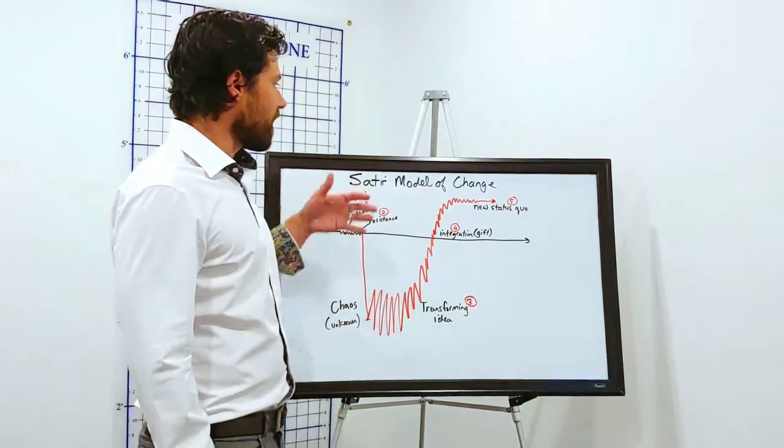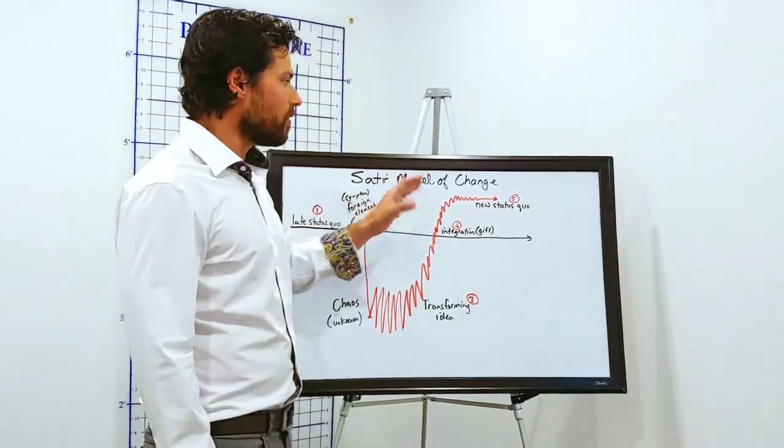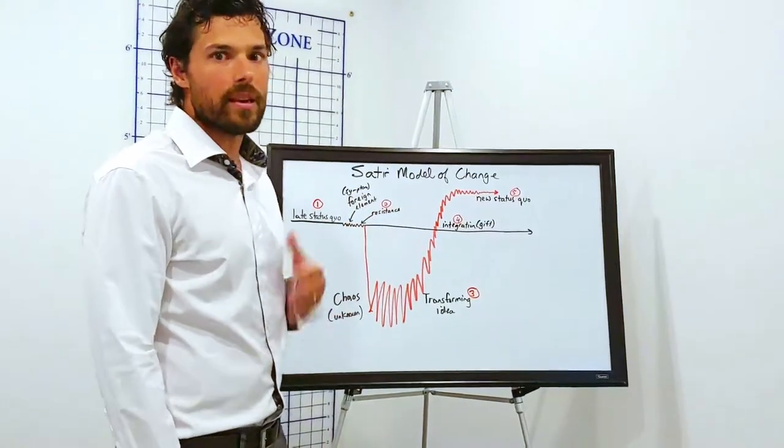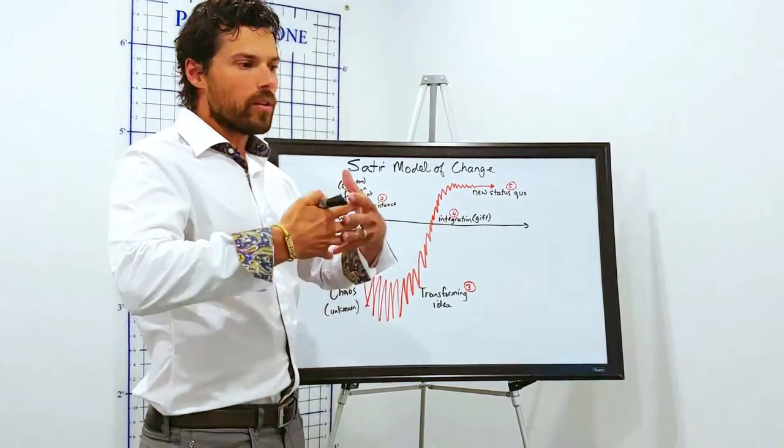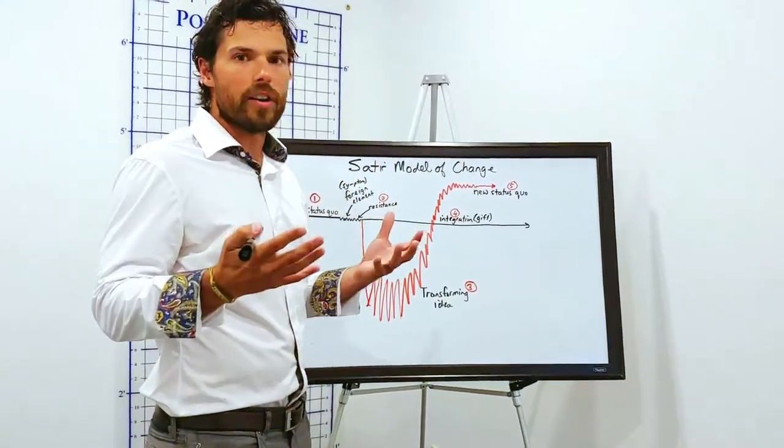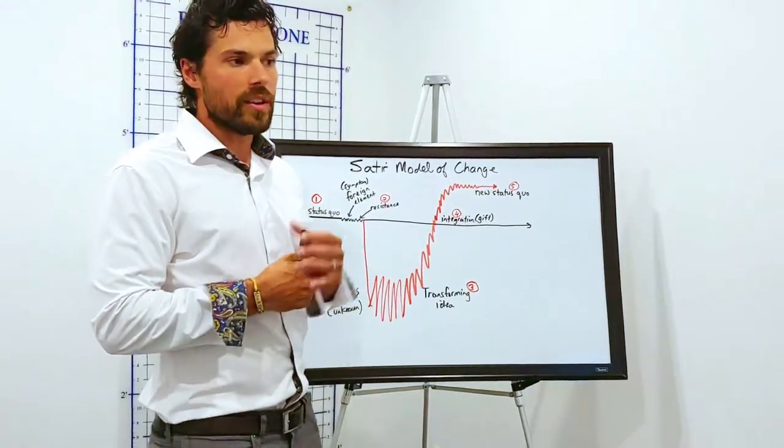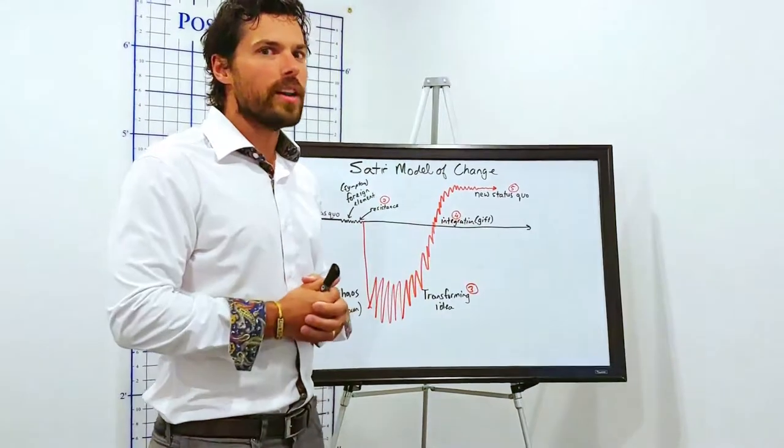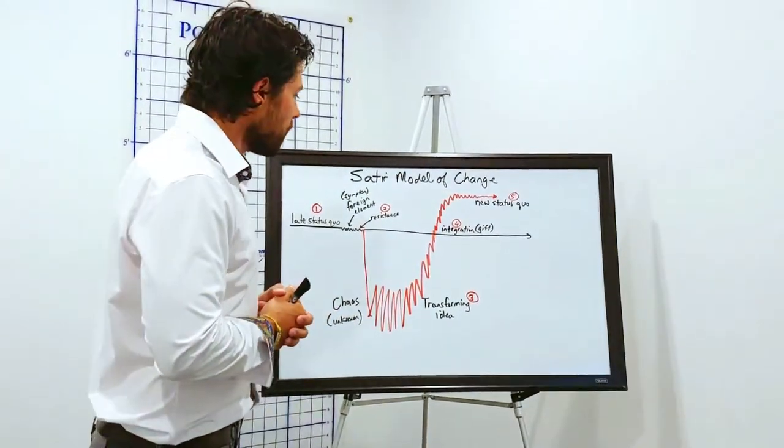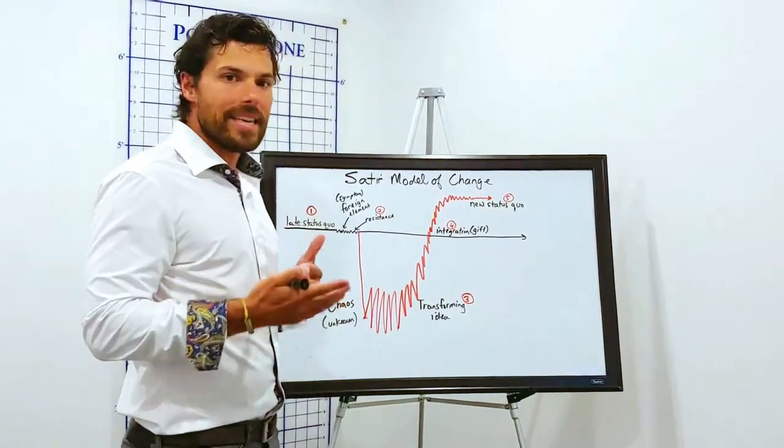Virginia Satir was a family therapist and she created this Satir model of change. Again, you can go and take a peek and read about it. It involves systems of helping you to gain perspective on different scenarios and situations that might be stressful in your life. She deals with organizations, family dynamics, so quite interesting work that she's done.